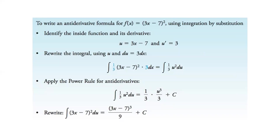What about this one? Here we're going to let the inside piece be our u, and the derivative of that is just 3. So our du is 3 dx. But we don't have a 3 dx in the integral, so we're going to add a 3 here. But if we multiply by 3, we also have to multiply by one third, and that one third goes out front as a constant so we don't have to worry about it.